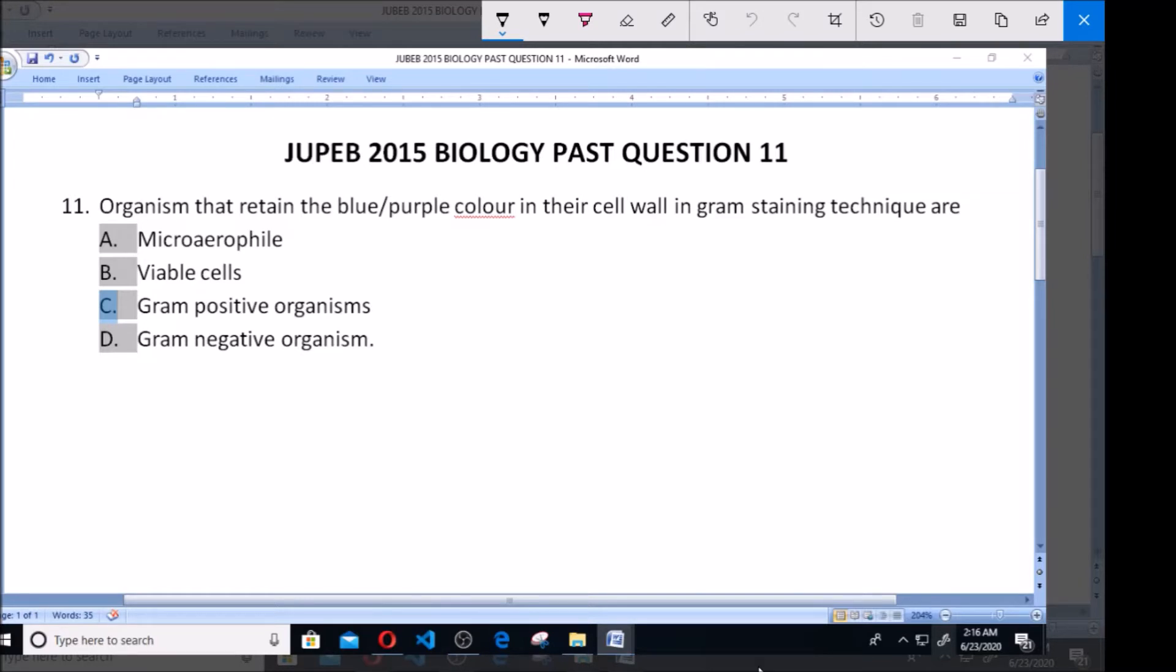Organisms that retain the blue-purple color in their cell wall in gram staining techniques are: A. Micro-aerophile, B. Variable cells, C. Gram-positive organisms, D. Gram-negative organisms. And here the correct answer is C, Gram-positive organisms.